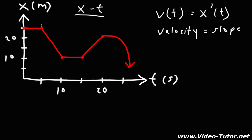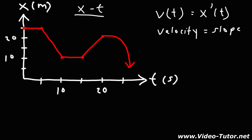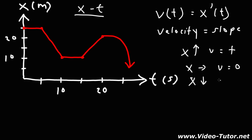We can determine the velocity at any one of these segments by calculating the slope of those line segments. Whenever the position function is increasing, velocity is going to be positive — the slope of that segment will be positive. If the position function is constant, the velocity will be zero. If the position function is decreasing, velocity will be negative.